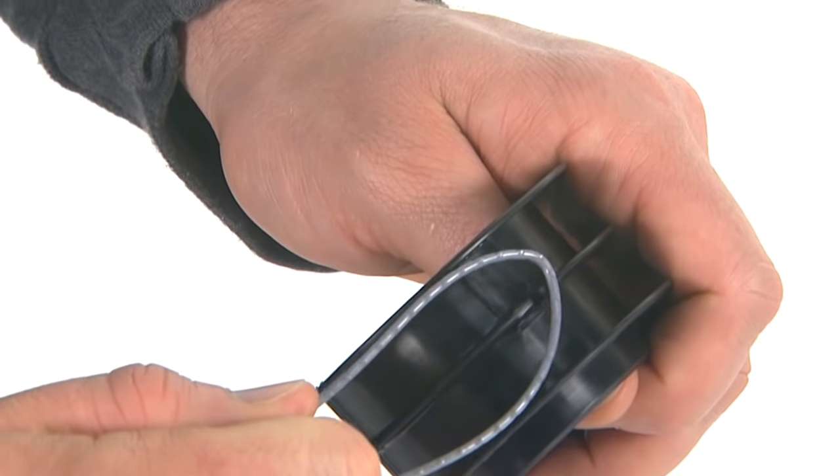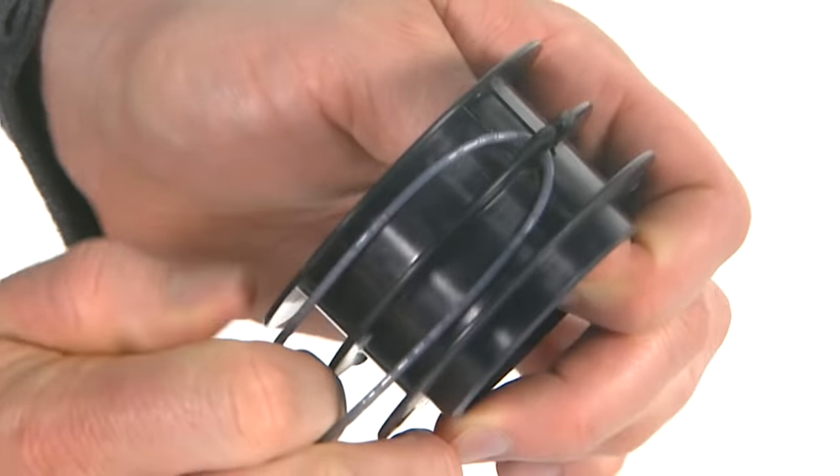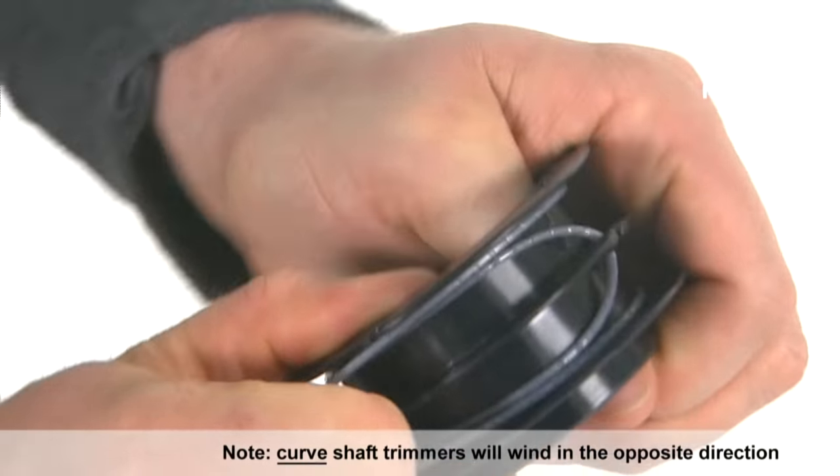Hold the spool in your left hand and take this middle loop and hook it over the slot in the spool and wind half over each side.